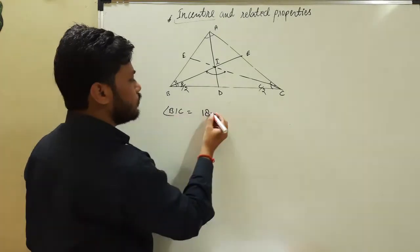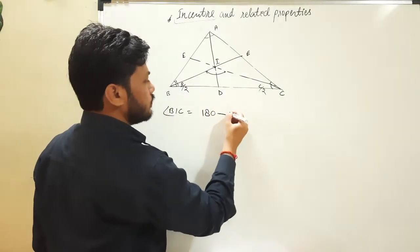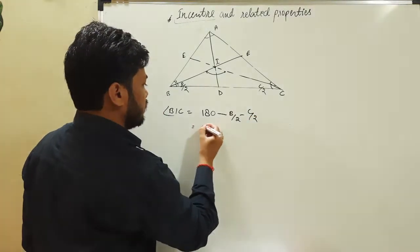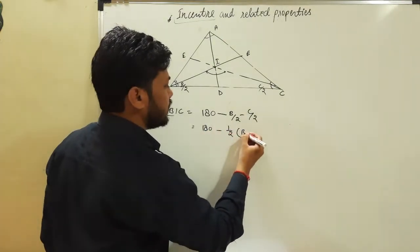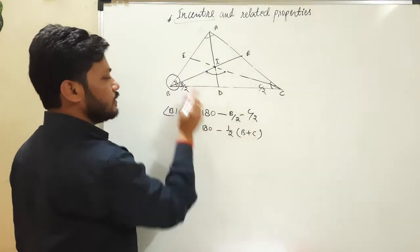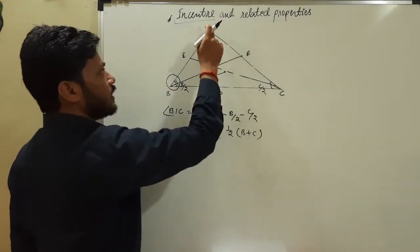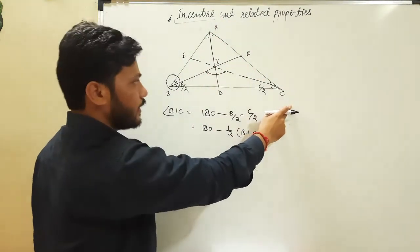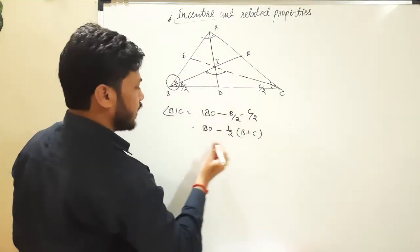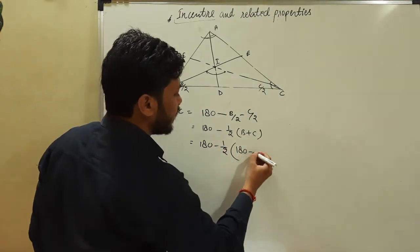So BIC is going to be 180 minus half of (B plus C). Now B plus C: since angle A plus angle B plus angle C equals 180, B plus C is going to be 180 minus angle A. So this can be written as 180 minus half of (180 minus angle A).